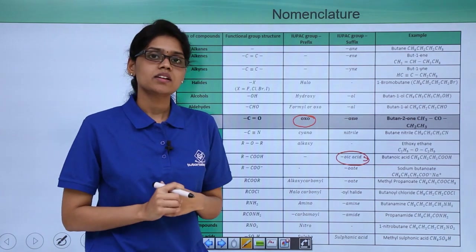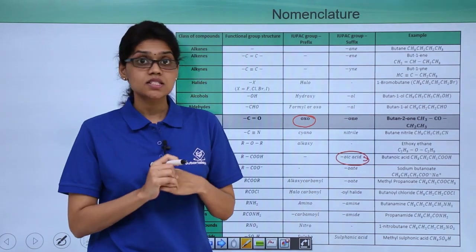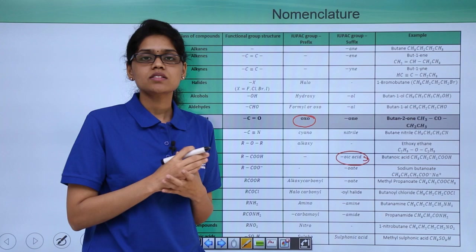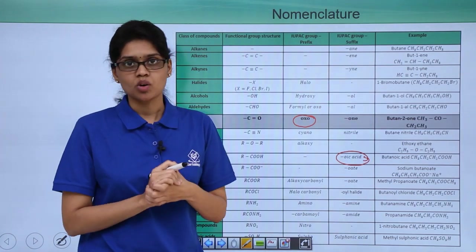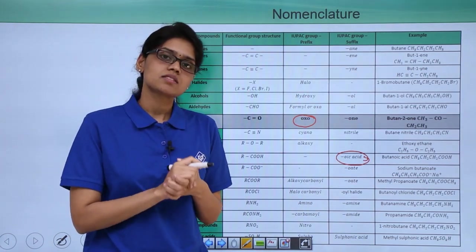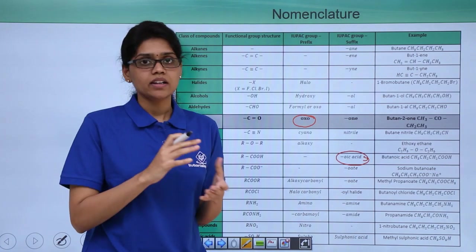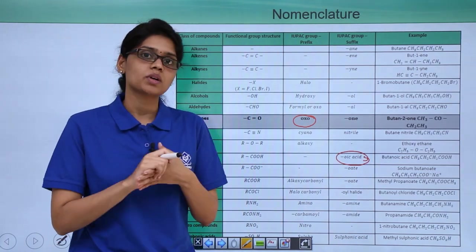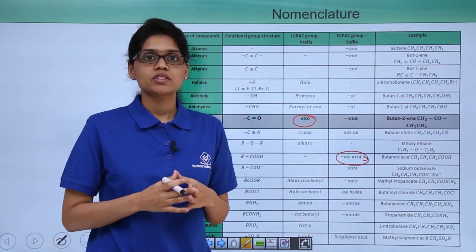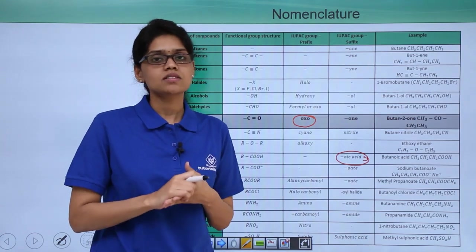I hope you are now clear using the examples that we have just discussed how to use the various rules that we have studied in IUPAC nomenclature to name the various organic compounds. Please stay tuned to understand how to do the nomenclature for cyclic compounds and benzene substitute compounds.